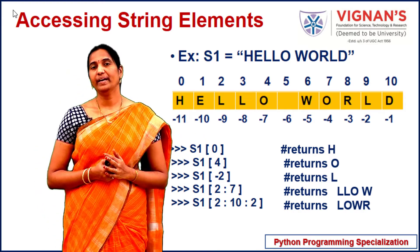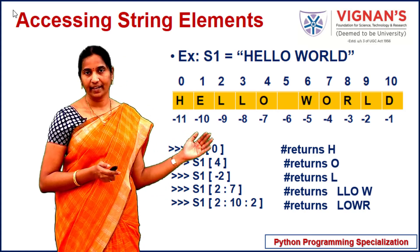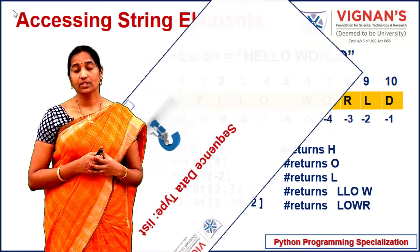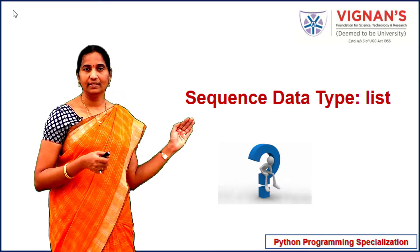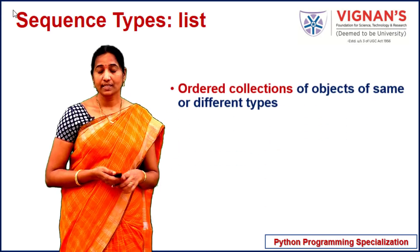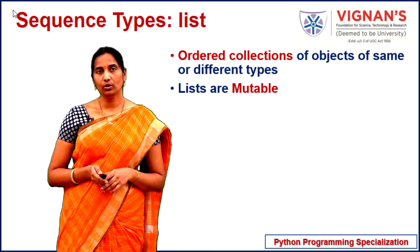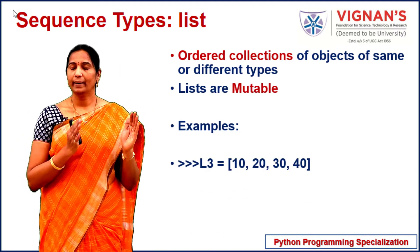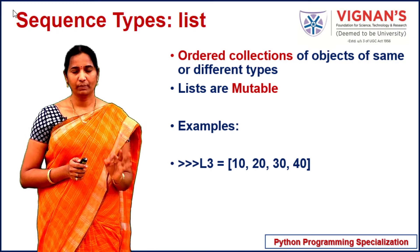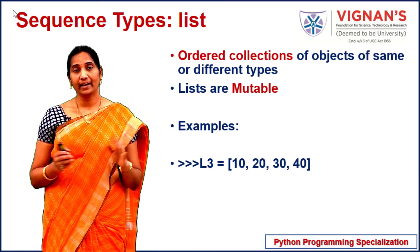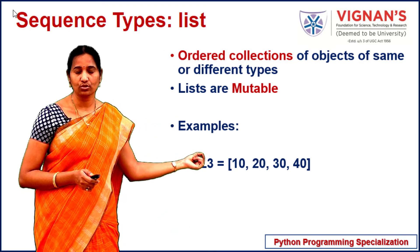The string data type is supported by most programming languages like C, C++, and Java. But in addition to that, Python supports a rich collection of data types like list, tuple, and dictionary. Now let's see the details of the list sequence data type. List is an ordered collection of objects of either the same or different types. You enclose elements in square brackets separated by commas. One important thing to remember about lists: lists are mutable.